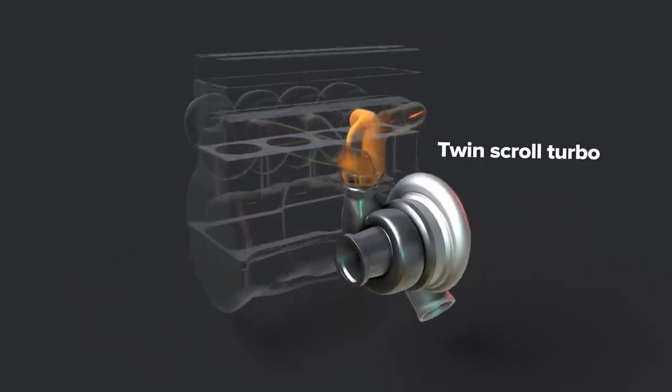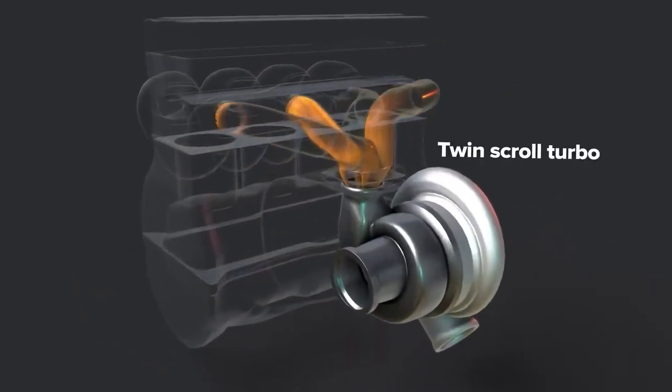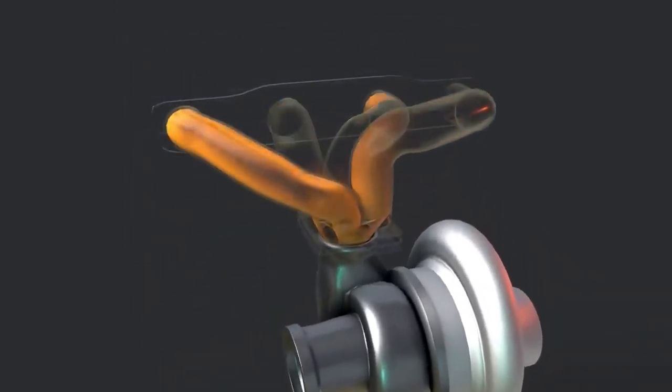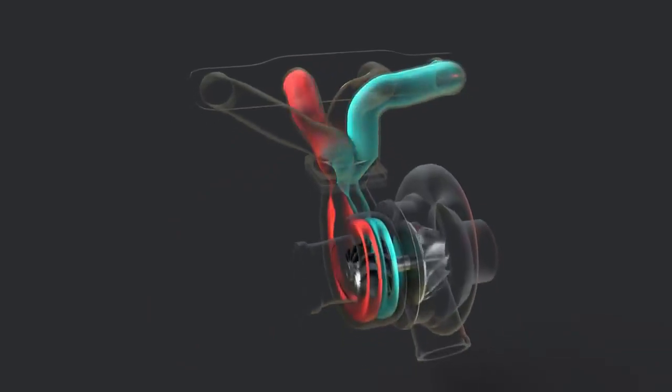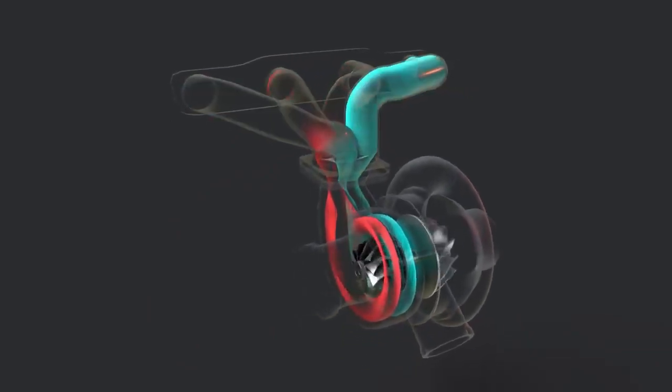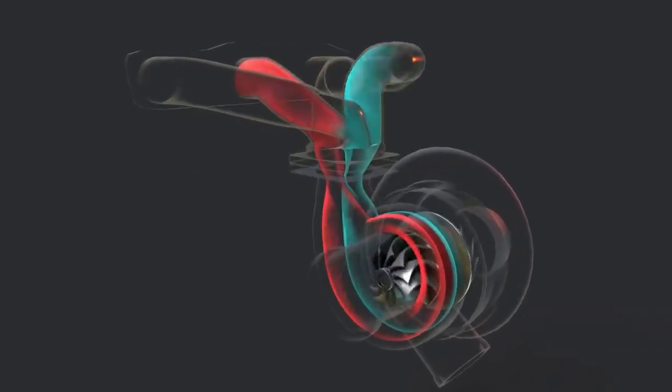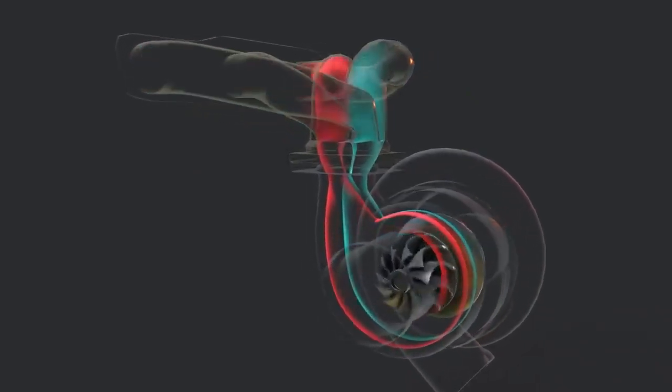Twin scroll turbo. Exhaust exits the cylinder in a pulse with a high pressure section followed by low pressure. Twin scroll turbos separate cylinders into pairs so that exhaust pulse waves do not interfere with each other and a continuous stream of maximum pressure exhaust reaches the turbine.